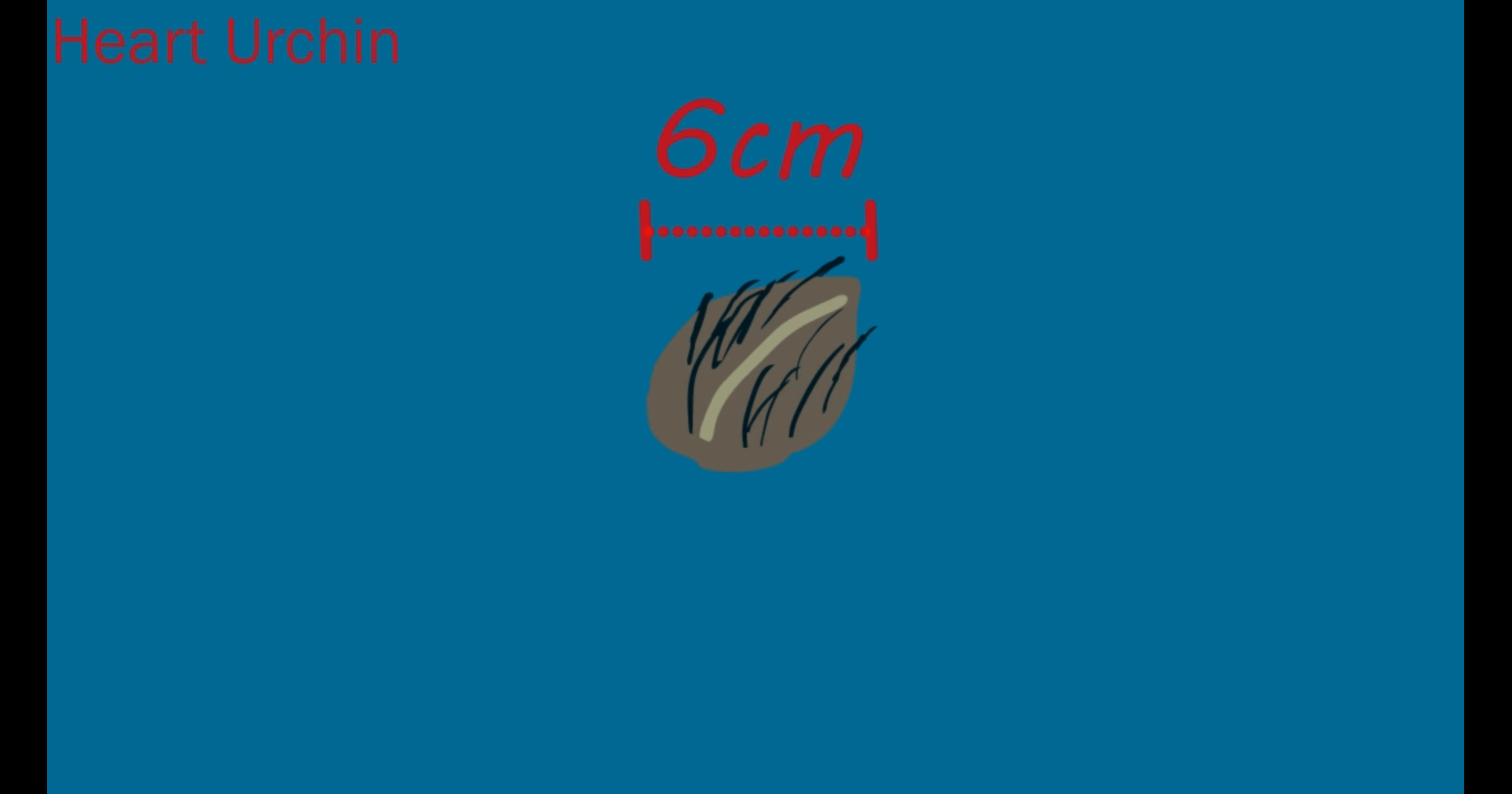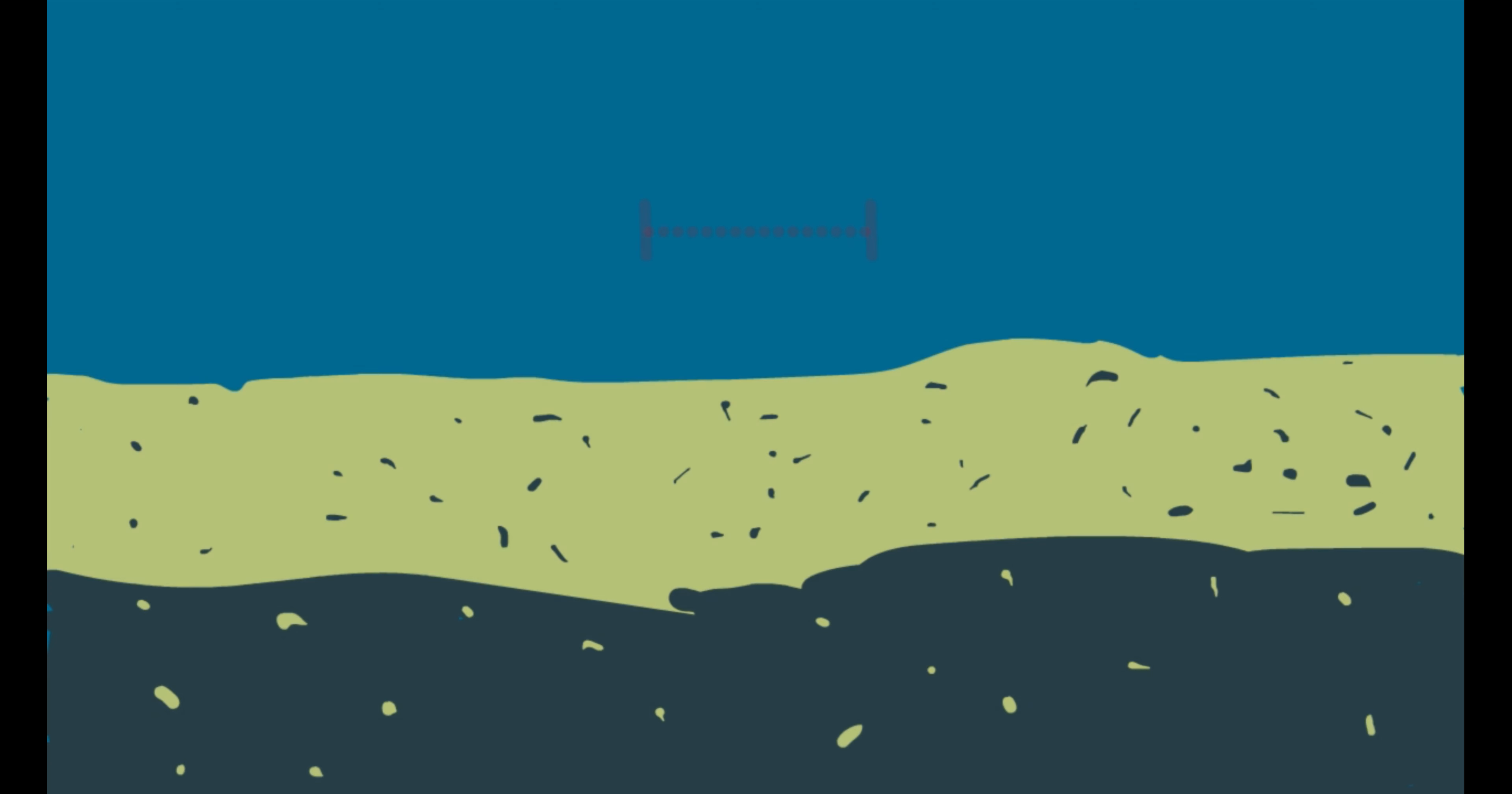Our first ecosystem engineer is the heart urchin. Like ants, the heart urchin has their skeleton on the outside. This is called an exoskeleton. This exoskeleton is heart-shaped and no longer than six centimeters. You may recognize their old shells on the beach. Heart urchins also have spines on their shells so they can dig better.